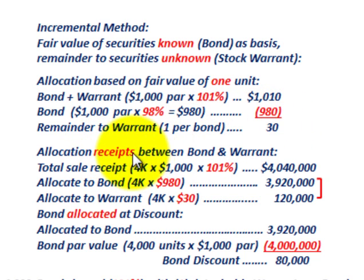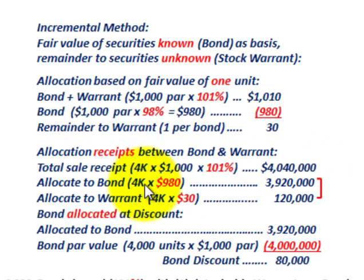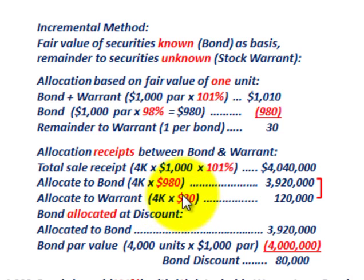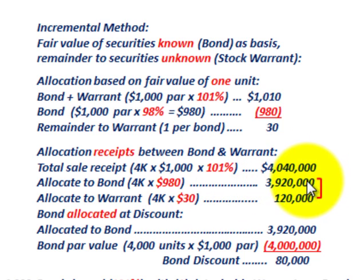Now, allocation of total receipts between the bond and the warrant. Total sale receipts: 4,000 units sold at $1,000 par at 101% equals $4,040,000. Allocated to the bond: 4,000 bonds at $980 each equals $3,920,000. Allocated to the warrant: 4,000 units at one warrant per bond at $30 each equals $120,000. We could also take the difference between total sales receipts of $4,040,000 less what we allocated to the bond at $3,920,000, and the difference of $120,000 is allocated to the warrants.